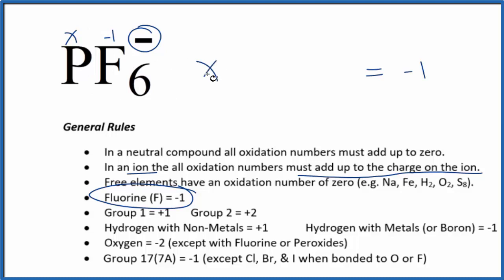We could say x plus six times minus one. We have six fluorine atoms, each one's minus one. That has to equal minus one.